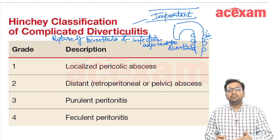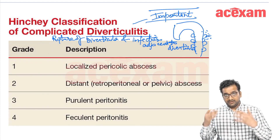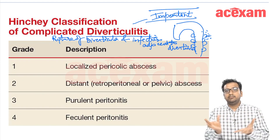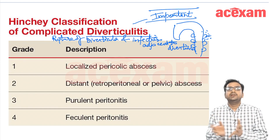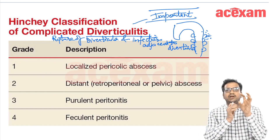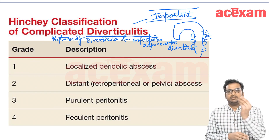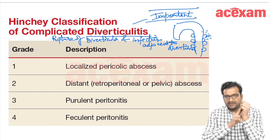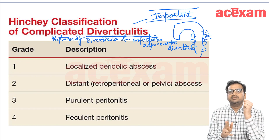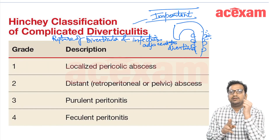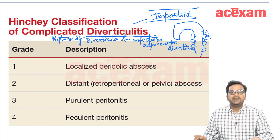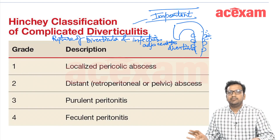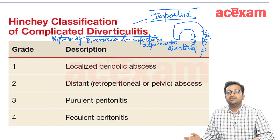This classification is regarding complicated diverticulitis. When there is rupture of a diverticulum with pus or inflammation around it: if there is an abscess along the colon in the pericolic region, that is Type 1. If there is a distant abscess either in the retroperitoneum or in the pelvis, that is Type 2. If there is generalized purulent peritonitis — pus in the abdominal cavity that is not localized — that is Type 3.